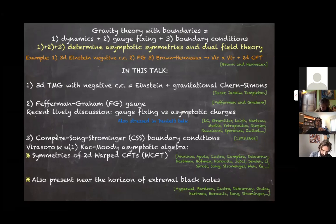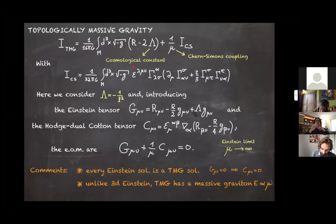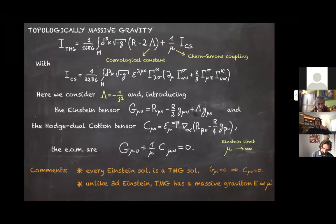Let me briefly review TMG for those unaware of this theory. This theory is the sum of two pieces: the Einstein-Hilbert part with the cosmological constant lambda, to which we add a gravitational Chern-Simons term coupled by mu — the so-called Chern-Simons coupling. The gravitational Chern-Simons term is like the famous A dA plus two-thirds AAA term. We consider negative cosmological constant.